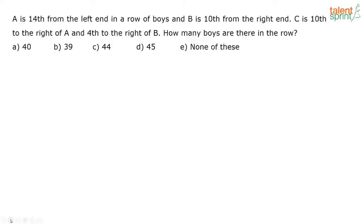The first question: A is 14th from the left end in a row of boys, B is 10th from the right end, C is 10th to the right of A and fourth to the right of B. How many boys are there in the row? To solve this question, if you find the positions of the persons given, it will become very easy — that is the smart way of approaching this question.